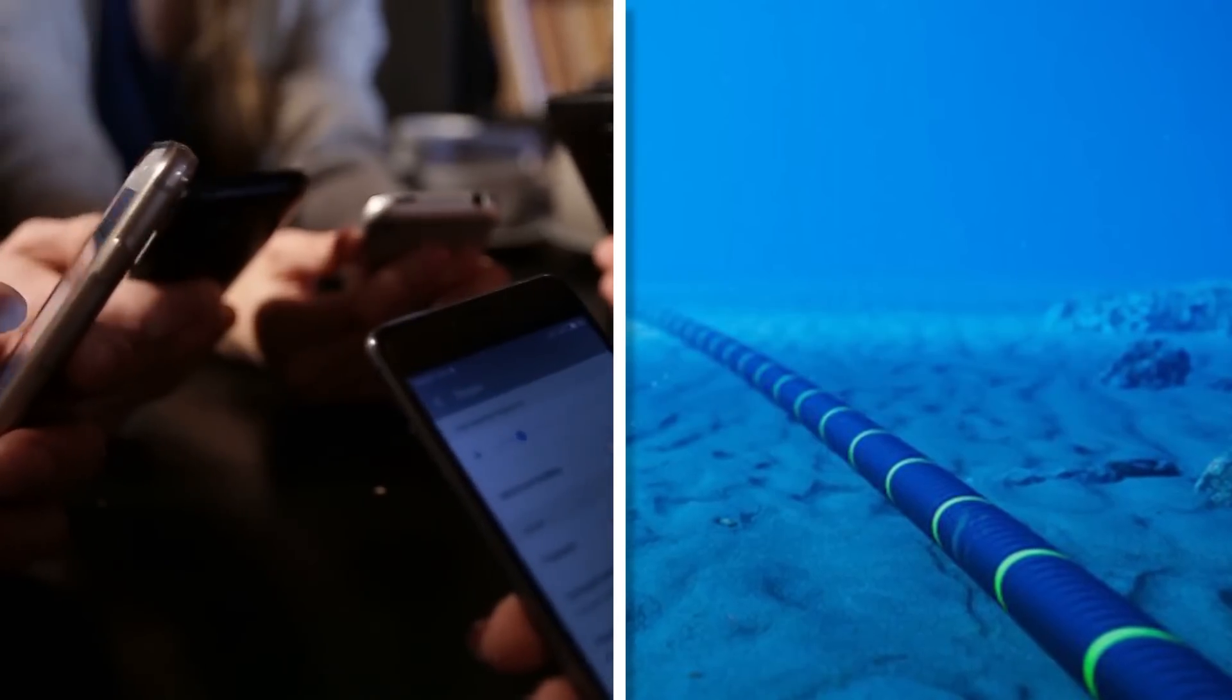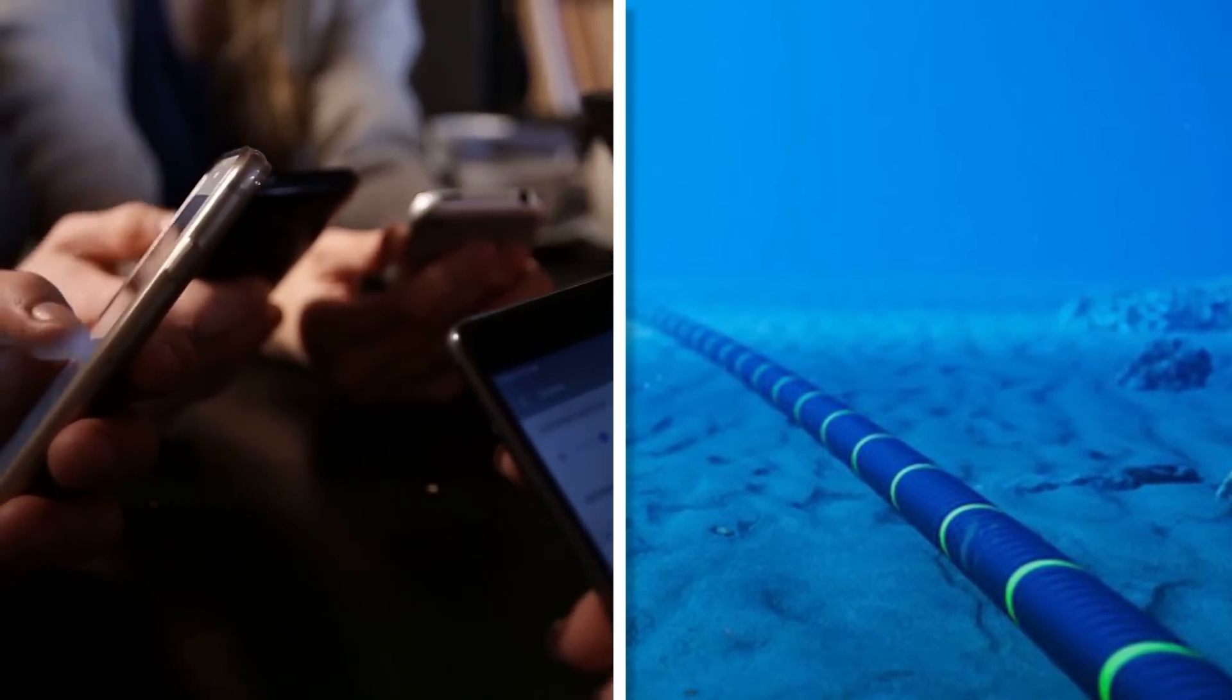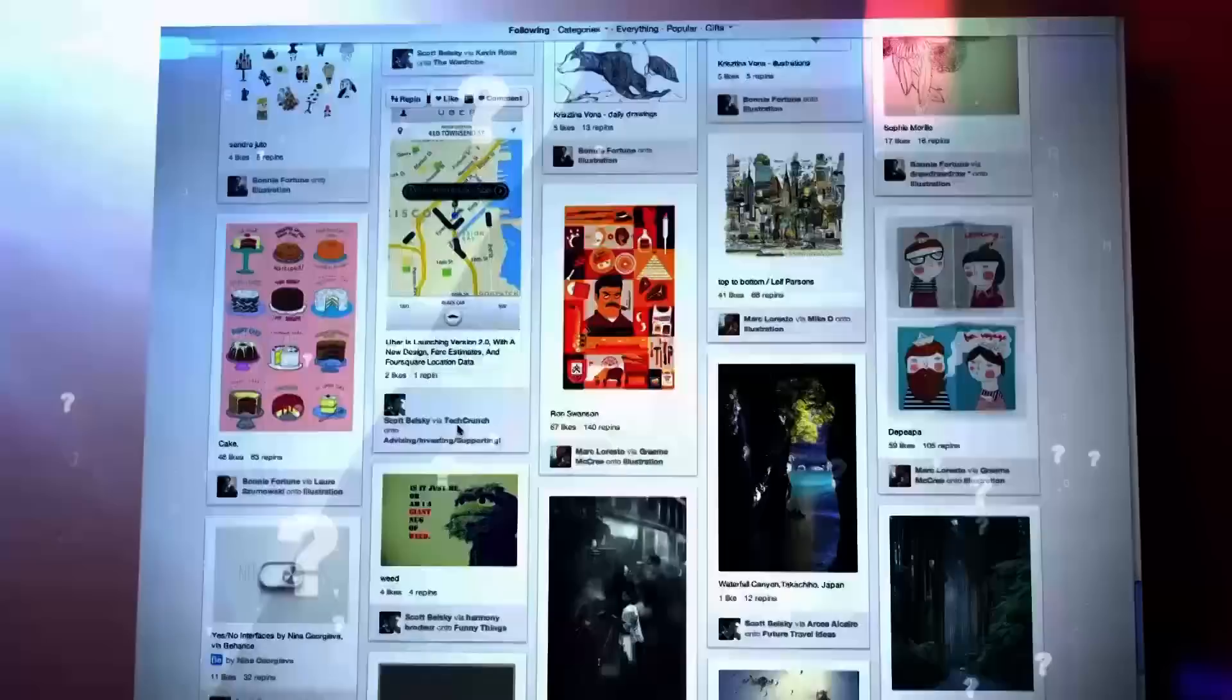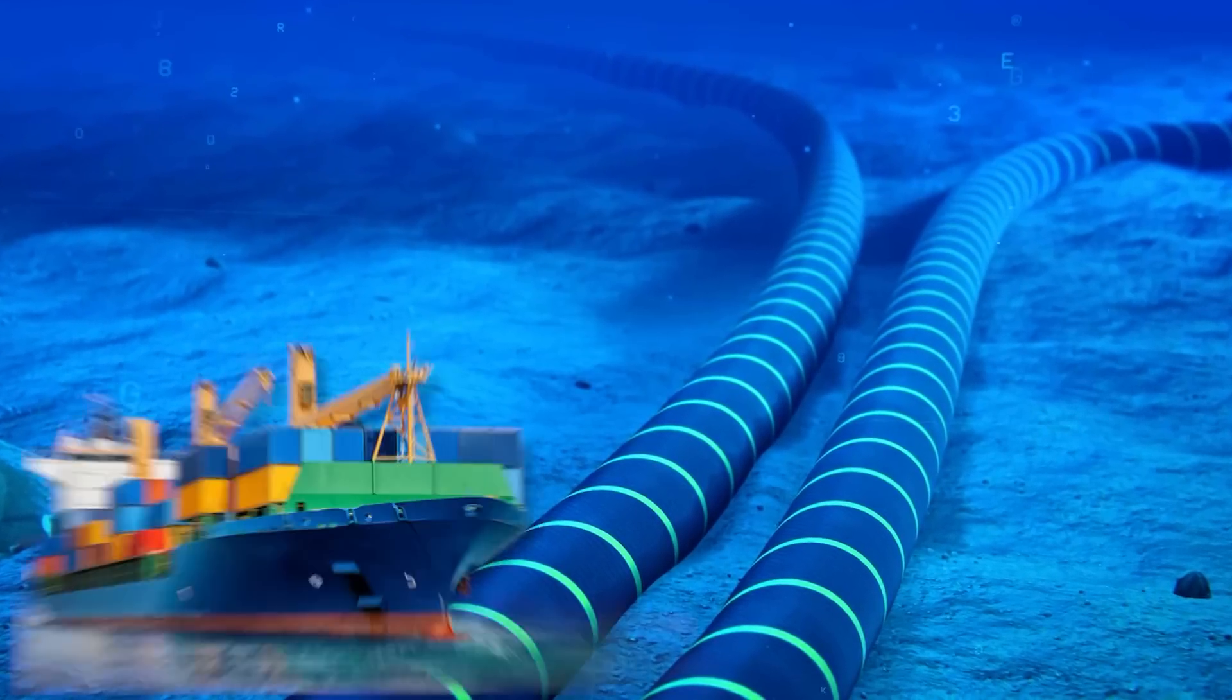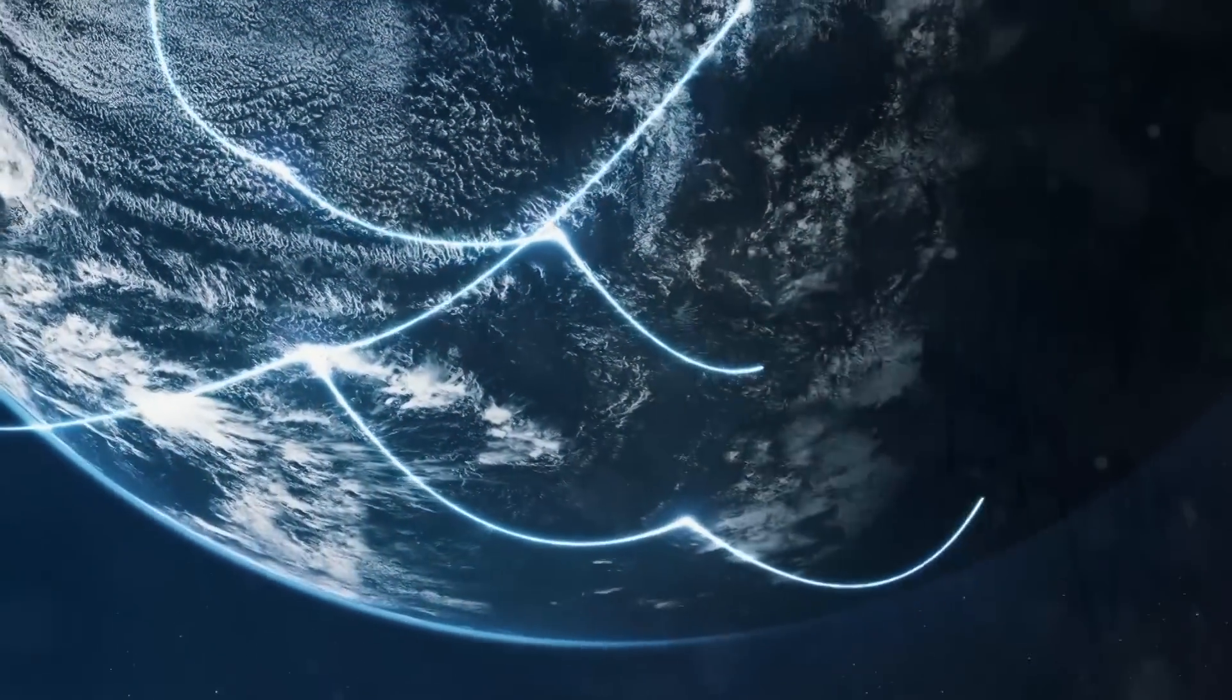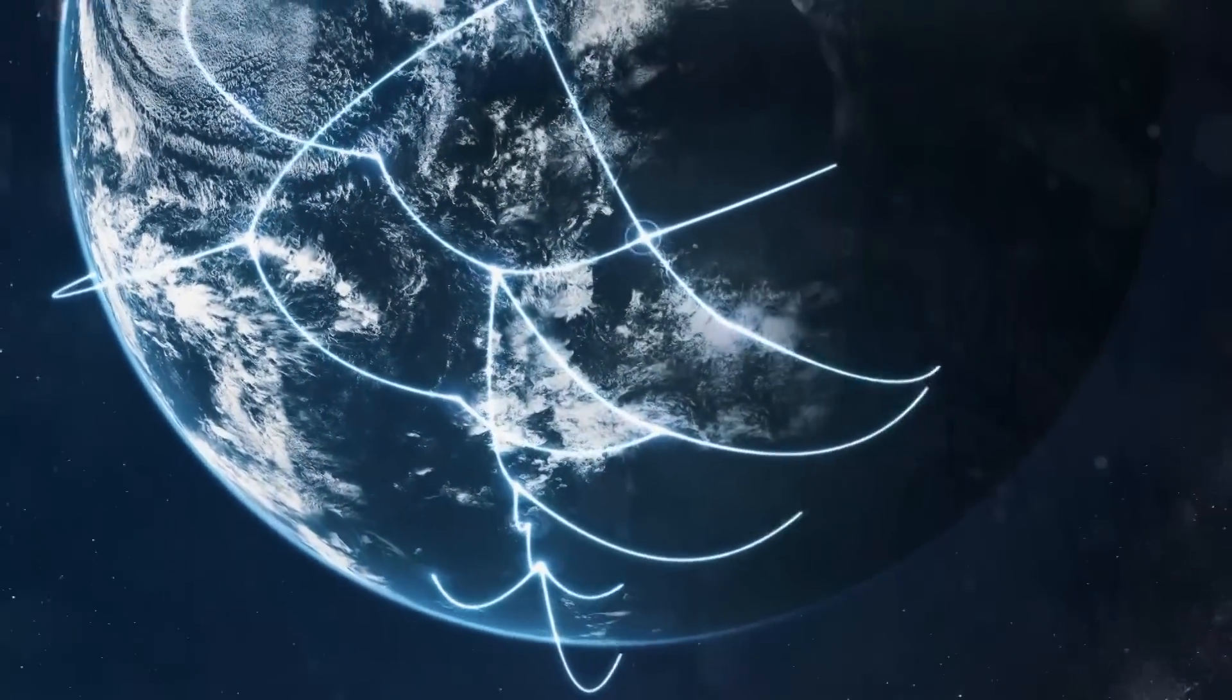With our dependence on the internet increasing by the day, modern life is totally reliant on these subaquatic wires. But how do they work? And what is the future of internet communications? Also, how is it possible that your internet connection is almost always there? Don't these cables get destroyed by ships and sharks? In today's video, let us explore the depths and find out how the internet travels across oceans.